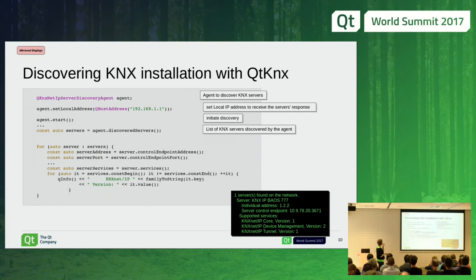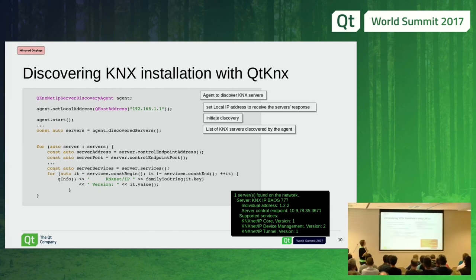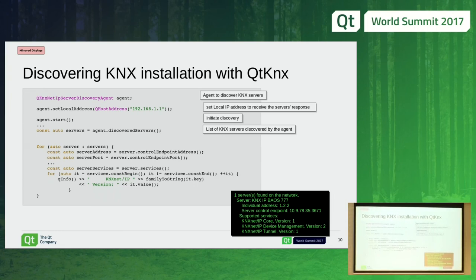So how do we do that concretely? To discover a KNX installation, we declare a discoverer. Then we set the local address so that the server knows to whom it has to respond. Then we start the discovery agent. Once it is done, we can recover from the agent the server that has been discovered. Then you can print the information you received. In this example, we discovered one server, and we have some information about it.